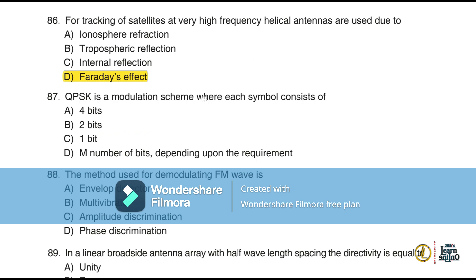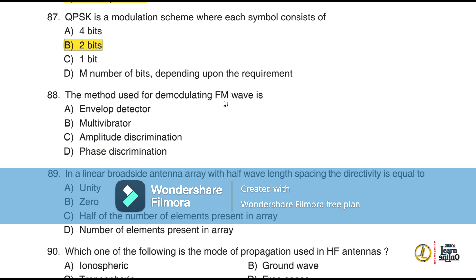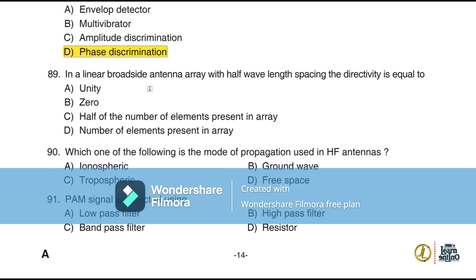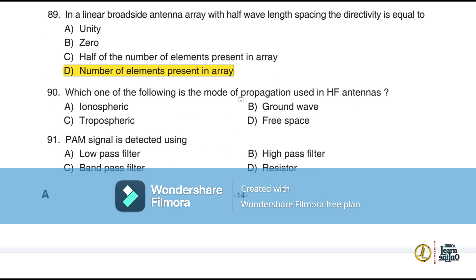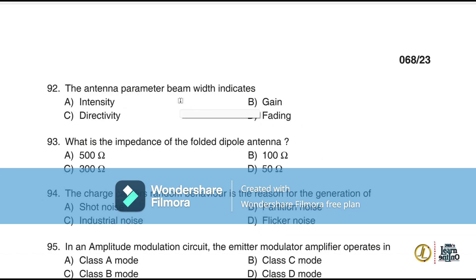Question 86: For tracking satellites at very high frequencies, helical antennas are used due to Faraday's effect. Question 87: QPSK is a modulation scheme where each symbol consists of two bits. Question 88: The method used for demodulating FM waves is phase discrimination. Question 89: In a linear broadside antenna array with half-wavelength spacing, the directivity is equal to the number of elements in the array. Question 90: The mode of propagation used in HF antennas is ionospheric propagation.